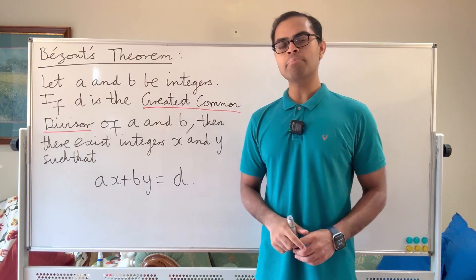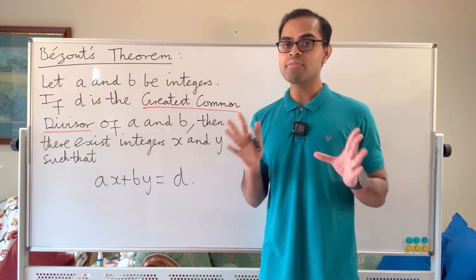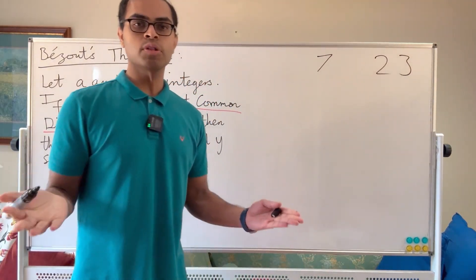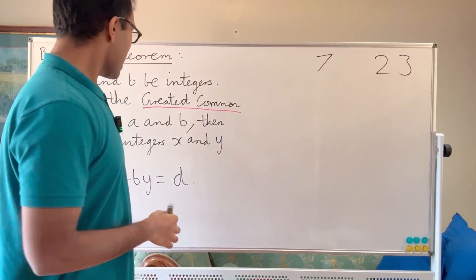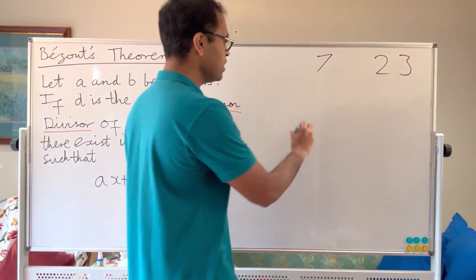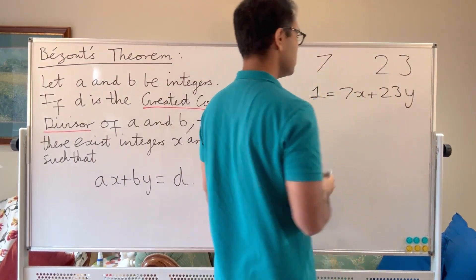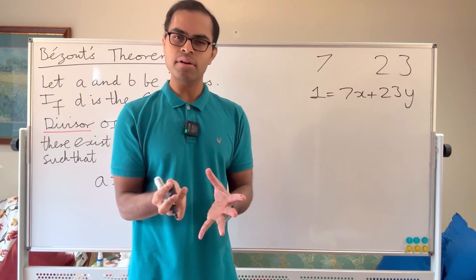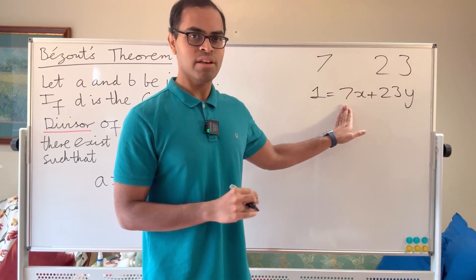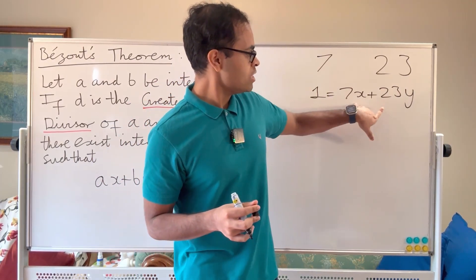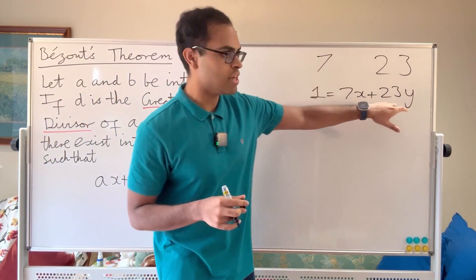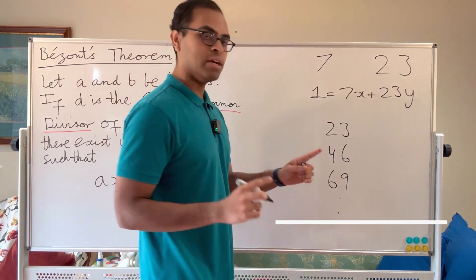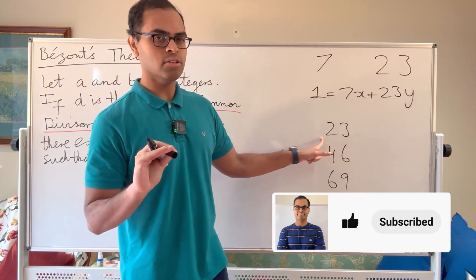An important example is when a and b are relatively prime — that means they don't have any common divisor other than one. Let's look at 7 and 23. Both are prime numbers, so they are relatively prime. Bézout's theorem says we can write the greatest common divisor d, which is 1, in the form 7x plus 23y. So how do we actually find x and y? Naively, we just want to find a multiple of 7 and a multiple of 23 that are one apart. Looking at multiples of 23: 23 is 2 away from 21, so not 1 apart from a multiple of 7.